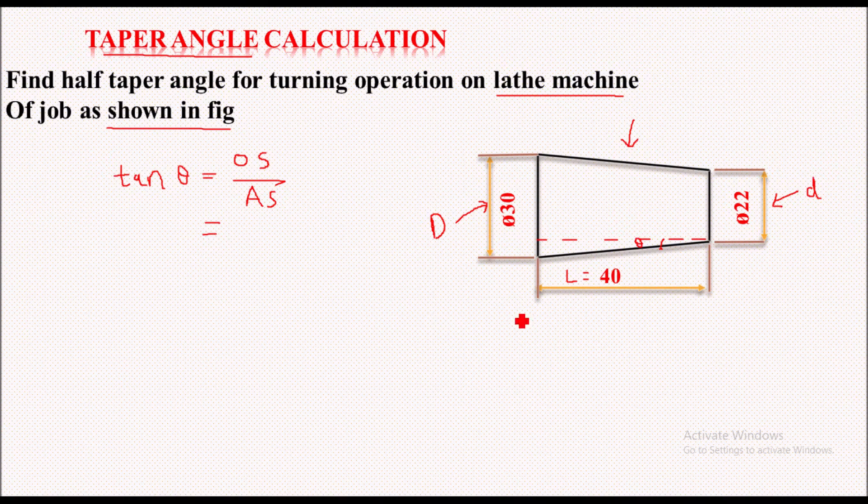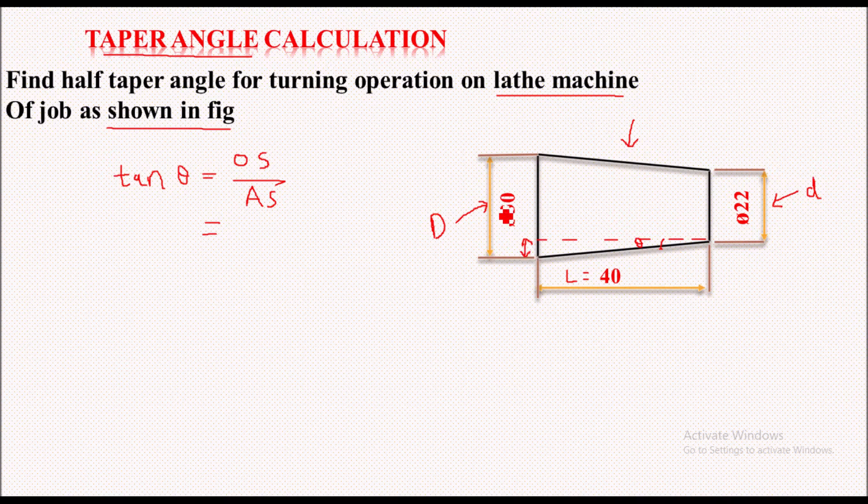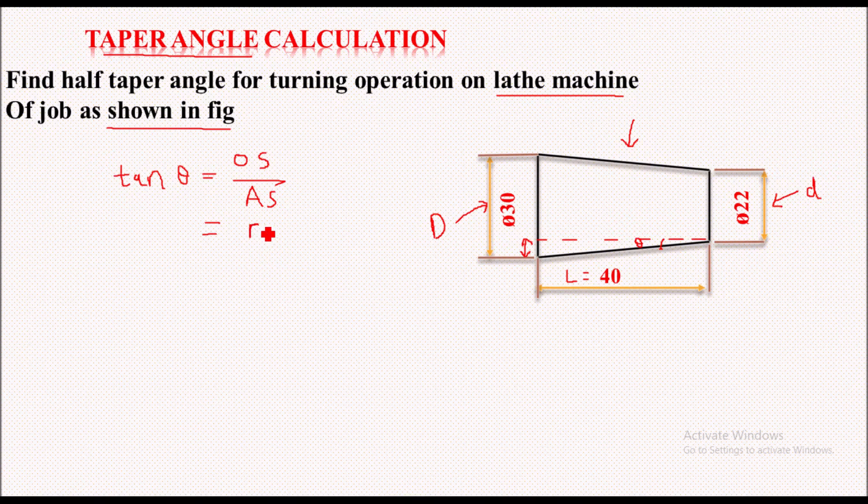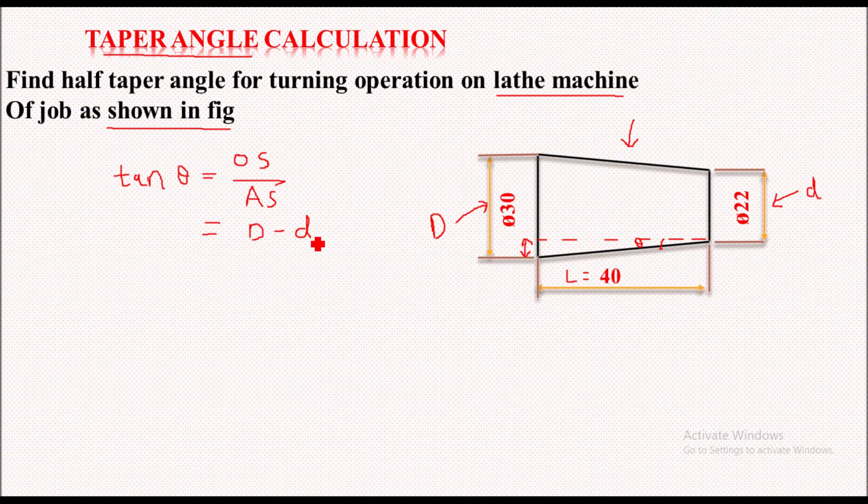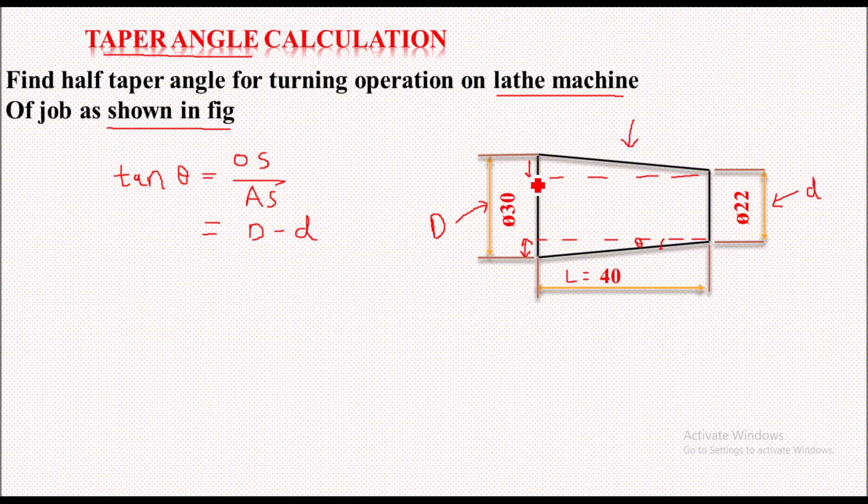So here what is the opposite side? Opposite side is this value we have to find out. This value is nothing but we have to subtract capital D from small d, so capital D minus small d. After doing this we will get this distance, we are getting these two distances. So we need only one side distance, so I will divide it by 2 to get this much distance only.